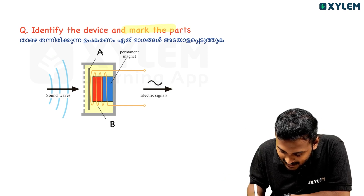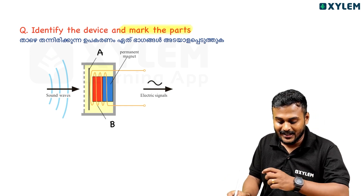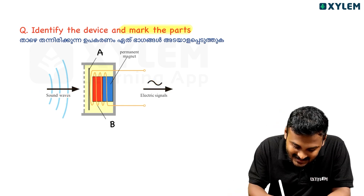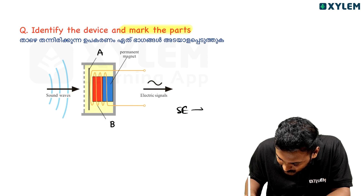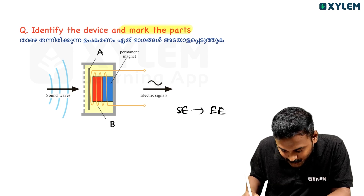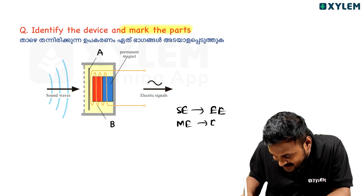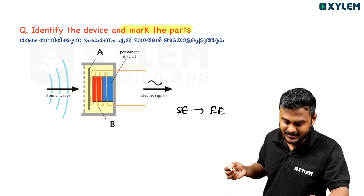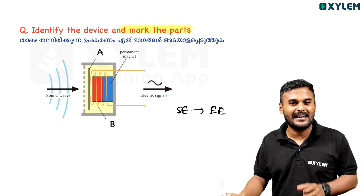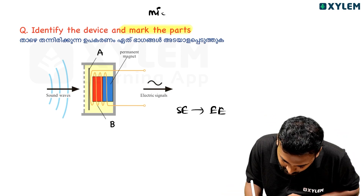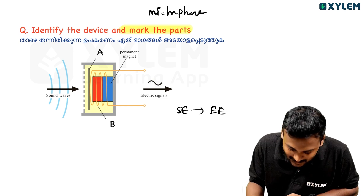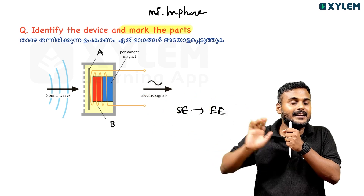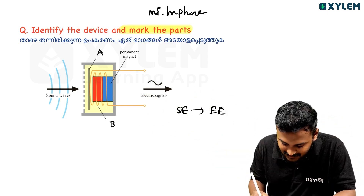Identify the device and mark the parts. Sound energy is converted to electrical signals. The device is a microphone. Sound energy converts to electrical energy — that is why it is a microphone. A is the diaphragm, B is the voice coil.